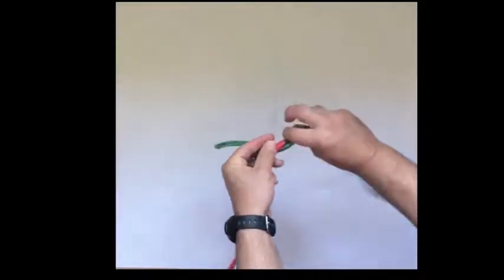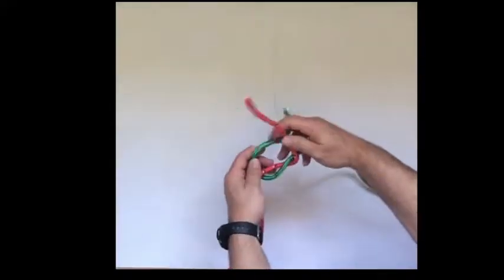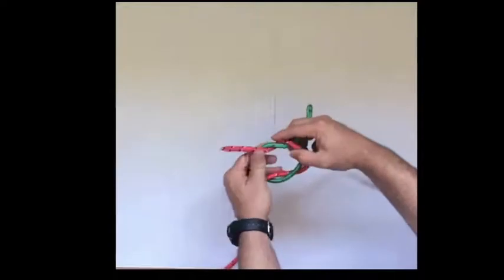So, we go left over right, tuck under, now we need more tail, because right is going to go over left, under and under again.